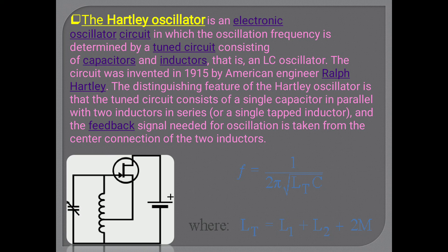The fourth and last type is the Hartley oscillator. It is an electronic oscillator circuit in which the oscillation frequency is determined by a tuned circuit consisting of capacitors and inductors — an LC oscillator. The circuit was invented in 1915 by American engineer Ralph Hartley, and in his honor it is named the Hartley oscillator. The distinguishing feature is that the tuned circuit consists of a single capacitor in parallel with two inductors in series, or a single tapped inductor.